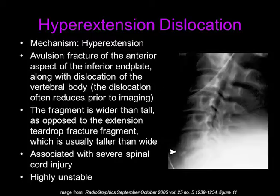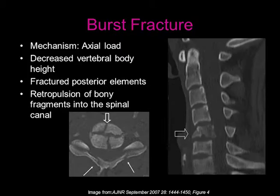Any patient with severe neurological injury requires a CT scan and/or MRI. A burst fracture results from an axial load, resulting in decreased vertebral body height as well as fractured posterior elements. You can even see retropulsion of bony fragments into the spinal canal. This is a very important sign because these fragments can result in injury to the cervical spinal cord.